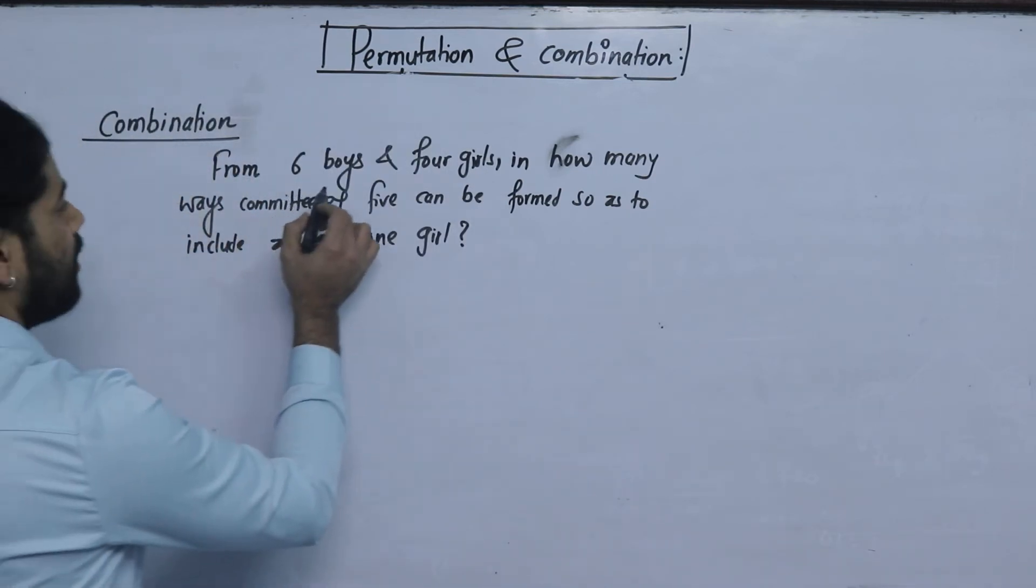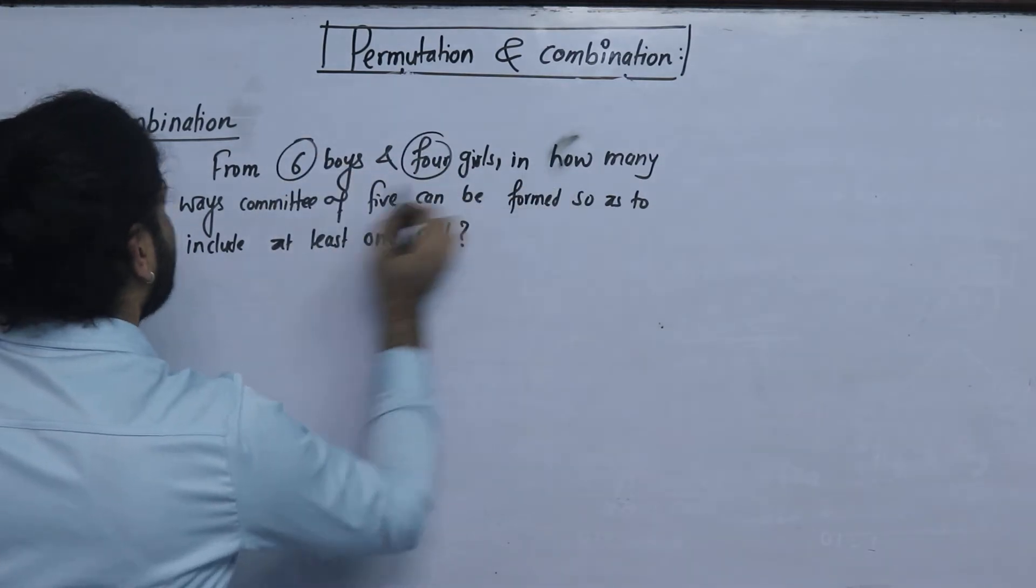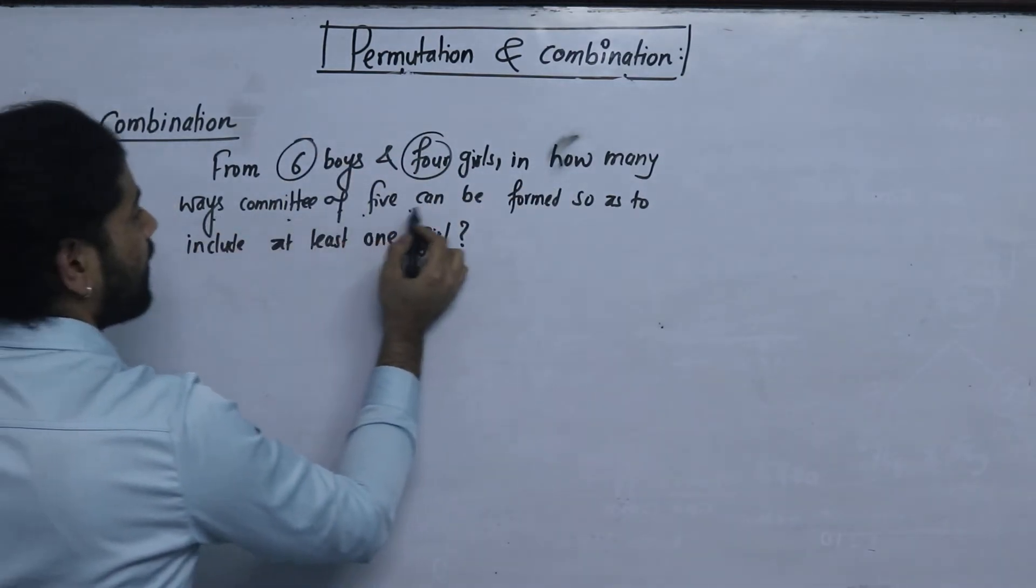From 6 boys and 4 girls, 6 boys and 4 girls, in how many ways committee of 5 can be formed?